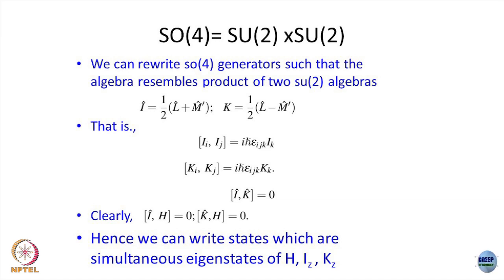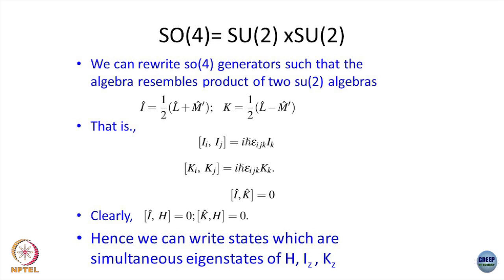What do I mean by 'do not talk to each other'? Any of the components of I with any of the components of K — the commutator is 0. What such a thing we call in discrete groups, we call it as a direct product group. If you have G1 and G2, and elements of G1 and G2 commute, order really does not matter — you call it a direct product group. Similarly, the SO(4) algebra involves two subalgebras which are SU(2) and SU(2). The corresponding group SO(4) will be a direct product of two SU(2) groups.